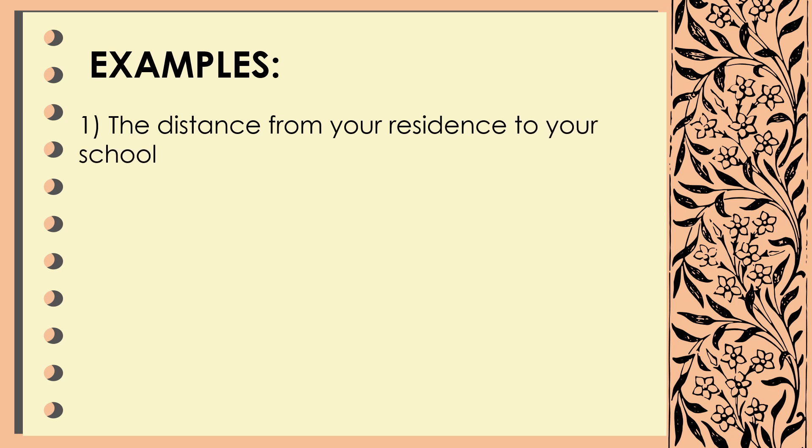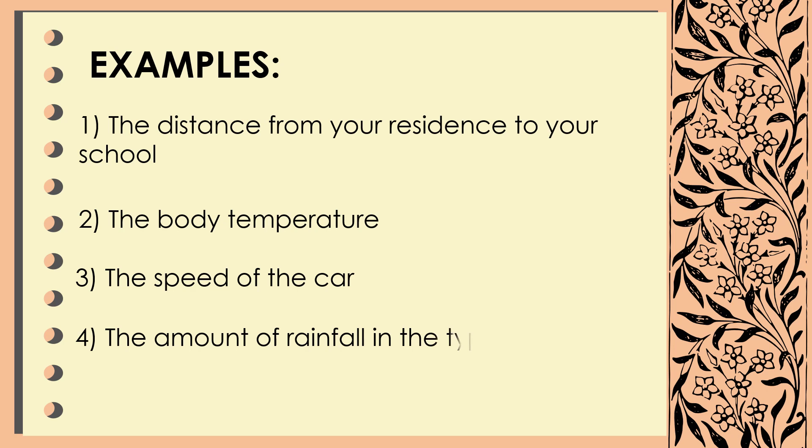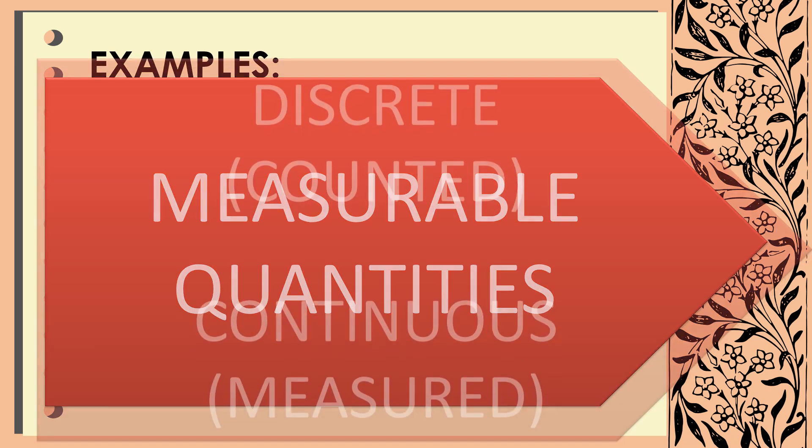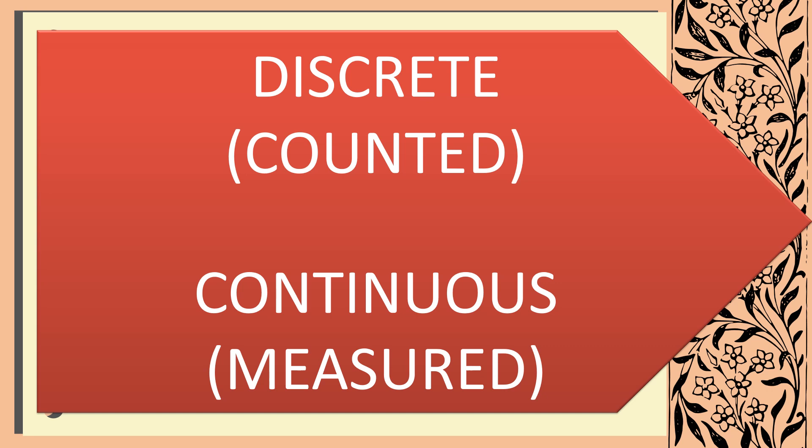What are examples of continuous variables? Those that are measured, such as number one, distance. The distance from your residence to your school. Next, number two, the body temperature. Number three, the speed of the car. Number four, the amount of rainfall in a typhoon. So, these examples are something that has measurable quantities. Okay, do you see now the difference between the two? The first one, discrete, has to be counted. The second one, continuous, is to be measured. So now, you already have a clear idea of discrete random variable and continuous random variable.